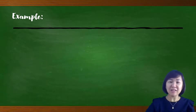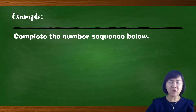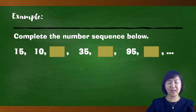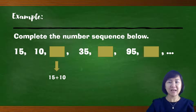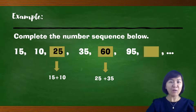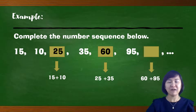Let's look at an example. Please complete the number sequence. Given 15, 10, and blanks. To get the third term, we add the previous two terms: 15 plus 10 equals 25. For the next term after 35, we add 25 plus 25, but wait — the answer is 60. For the last term, 60 plus 95 gives 165.